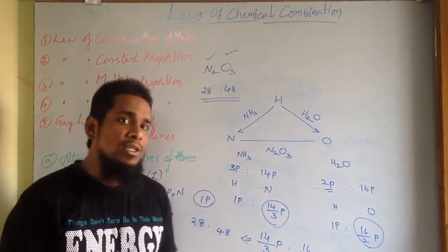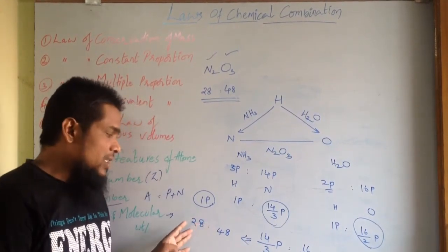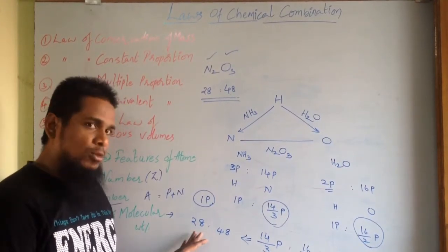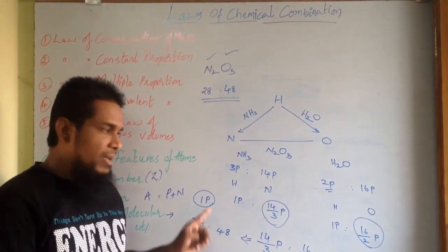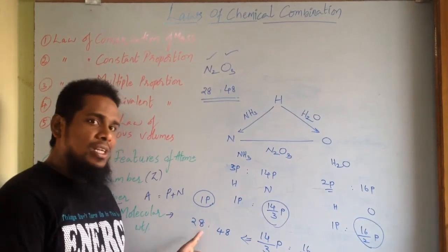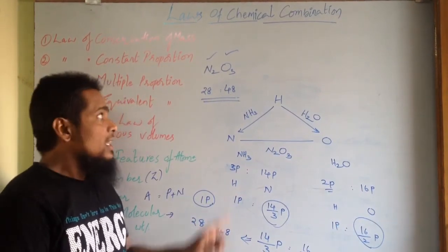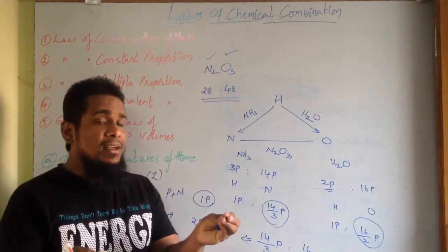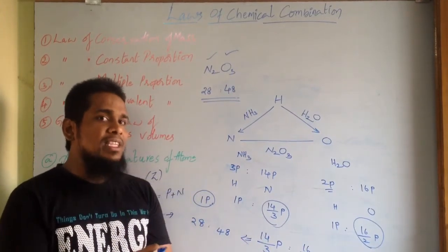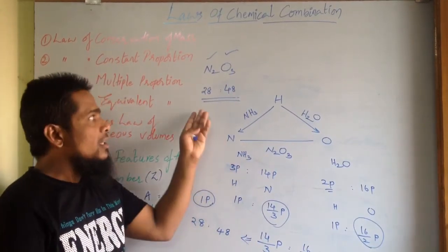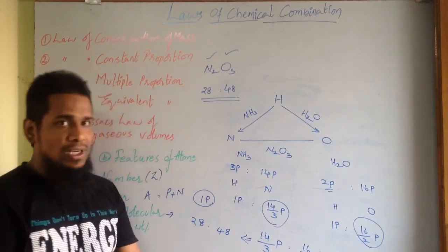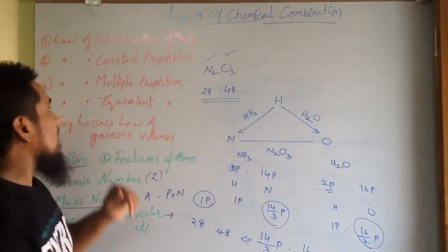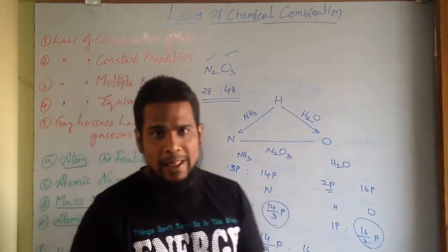The ratio of nitrogen and oxygen combining with one part of hydrogen is 28 is to 48. Similarly, the ratio of nitrogen and oxygen when they combine with each other in N2O3 is also 28 is to 48. This confirms the law of equivalent proportions.